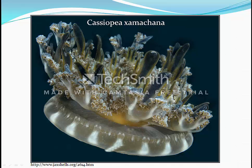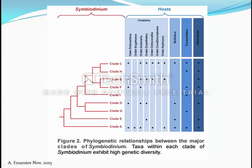Symbiodinium was first described in the jellyfish Cassiopeia xamachana by Dr. Frudenthal, and this is the genus of upside-down jellyfish as seen here. As you can see, there's a dense population of Symbiodinium in the tissues giving the brown color, and it's quite beautiful. It's worth noting that even though a lot of Symbiodinium species can look similar, they are quite diverse and create symbiotic relationships with a variety of different organisms, including mollusks, jellyfish, flatworms, corals, and anemones.